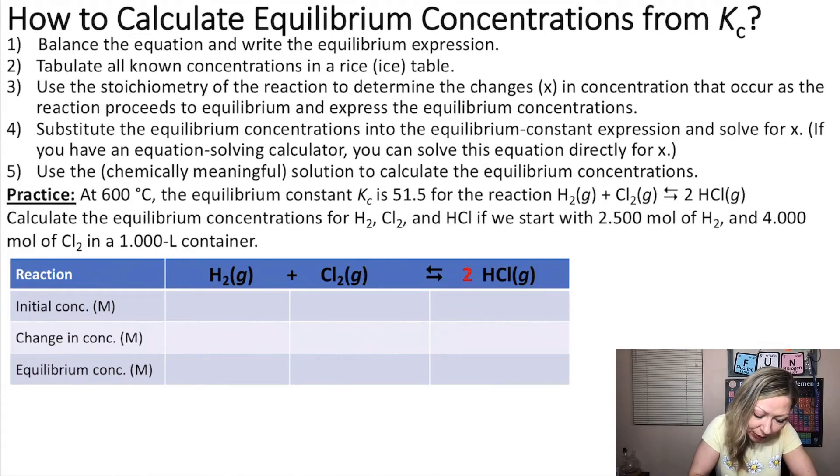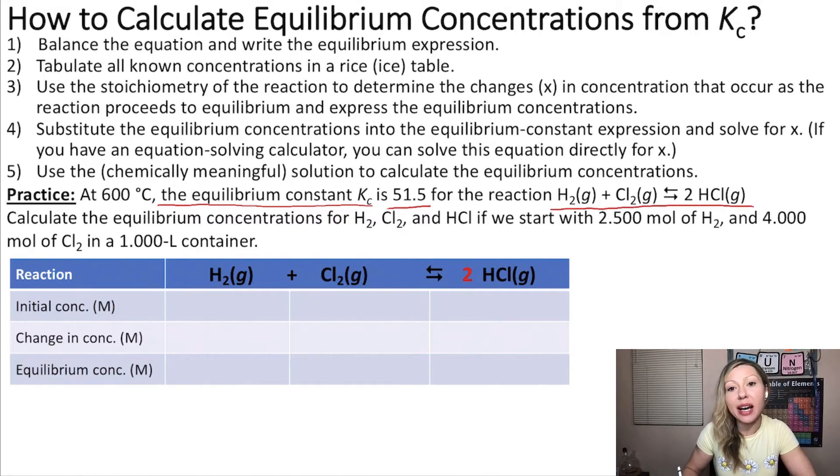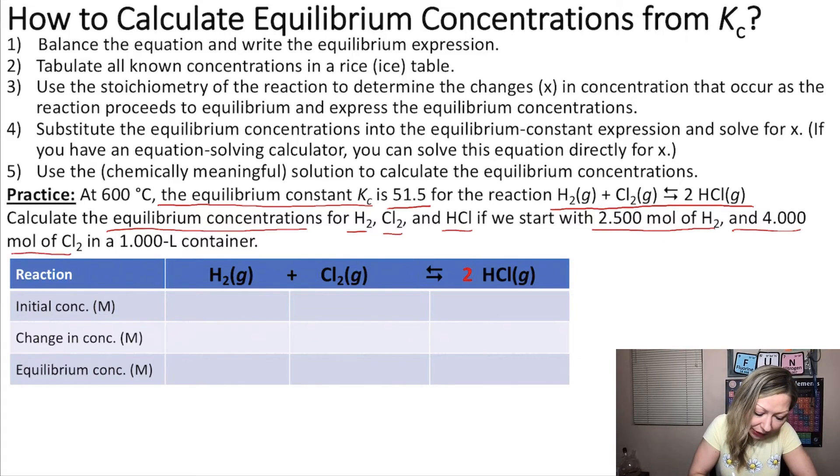At 600 degrees Celsius the equilibrium constant Kc is 51.5 for the reaction of H2 plus Cl2 gas giving us 2 moles of HCl gas. Let's calculate the equilibrium concentrations for H2, Cl2, and HCl if we start with 2.5 moles of H2 and 4 moles of Cl2 in a 1 liter container.